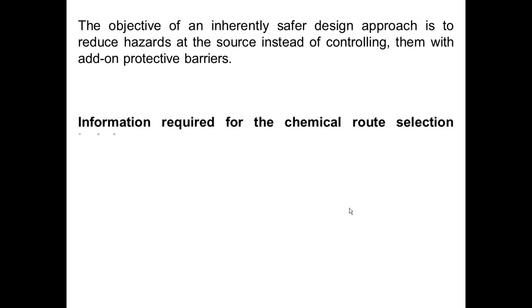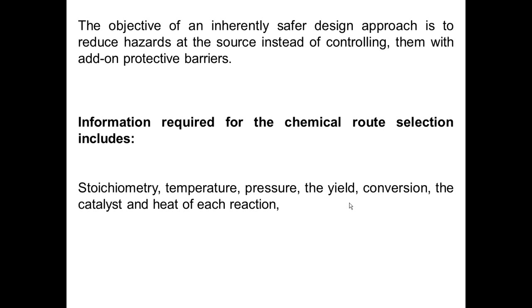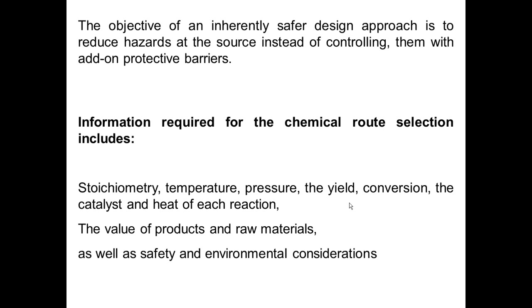Information required for the chemical route selection includes stoichiometry, temperature, pressure, yield, conversion, catalyst, and the heat of each reaction. Also, the value of the products and raw materials, as well as safety and environmental considerations. Any of these can be considered as criteria that measure the impact of each chemical route for the purpose of the decision-making process.